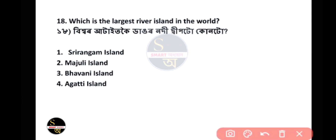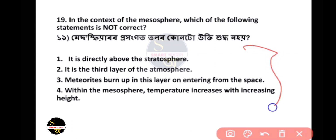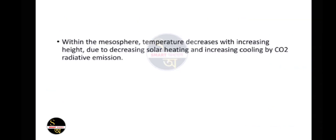Question number 19: In the context of the mesosphere, which of the following statements is not correct? The incorrect statement is option number 4: 'Within the mesosphere, temperature increases with increasing height.' The correct statement is: within the mesosphere, temperature decreases with increasing height due to decreasing solar heating and increasing cooling by CO2 radiative emission.